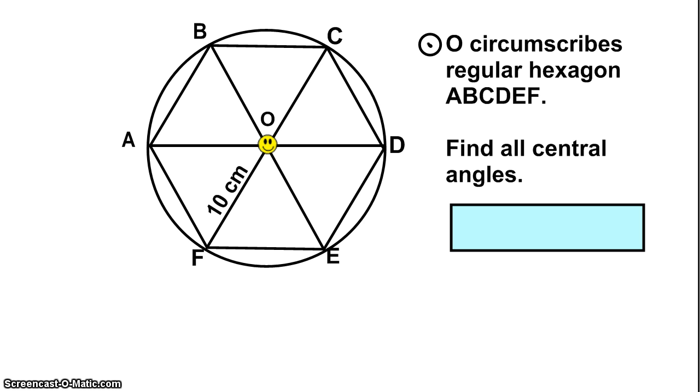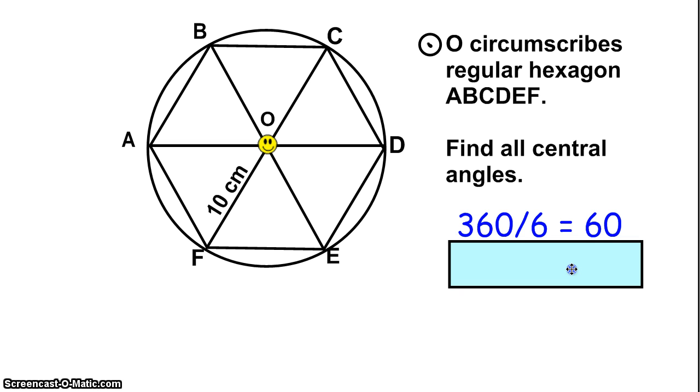If I have an inscribed regular hexagon, I can actually find all of the central angles by taking the degrees in the circle, which is 360, and dividing it by how many triangles make up that shape, which is also how many sides there are. So 360 divided by 6 gives me 60. You can apply this to an inscribed pentagon. You can apply it to several different types of questions.